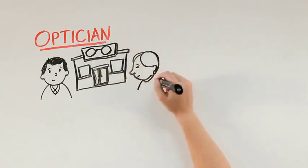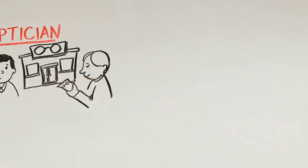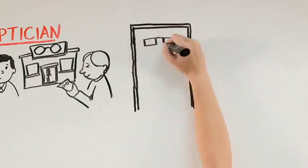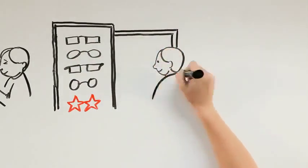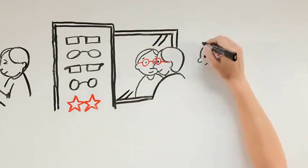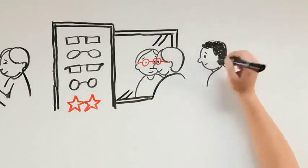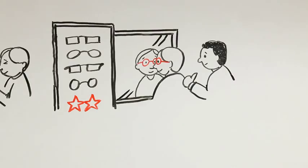You usually go to them with a prescription for glasses and they will show you different frames and different types of lenses and will be able to help you make good choices for a pair of glasses or contact lenses. Opticians are not involved in diagnosing or treating eye conditions.